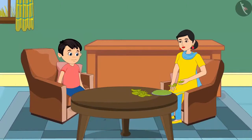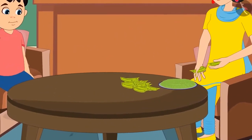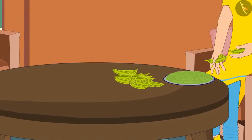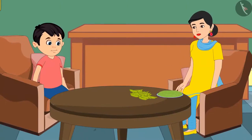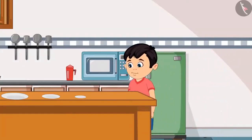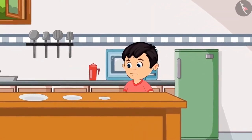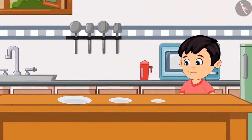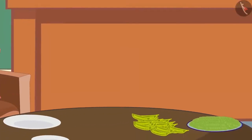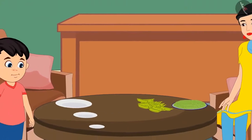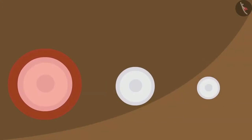Today, Chotu's mother is sitting in the room peeling some peas. Her plate is full and she tells Chotu: just bring a small plate for me from the kitchen. Chotu goes to the kitchen but does not understand which is the small plate. Hey, both these plates are smaller than this plate — so which plate should I give to Mom? Chotu took all three plates to his mother and asked her which plate to give.